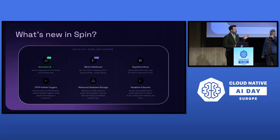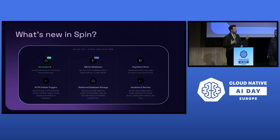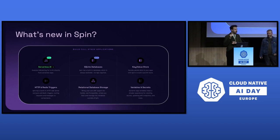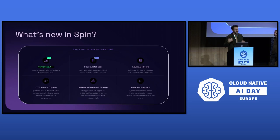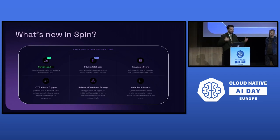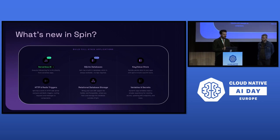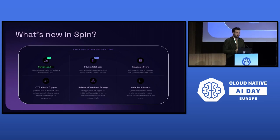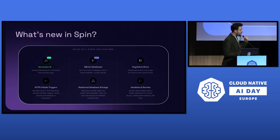We introduced Spin back in 2022, and over the last couple of months we've been working on adding integrations to help you build applications. Going back to WebAssembly being a sandbox: anything you'd like to execute from inside the sandbox has to go through a capability-based system where you can explicitly allow or deny your WebAssembly application from making outbound HTTP connections, opening files, or opening TCP connections. Spin makes it very easy to make connections to databases and key-value stores — it comes built in with a key-value store based on SQLite, and integrates with variables and secrets providers.